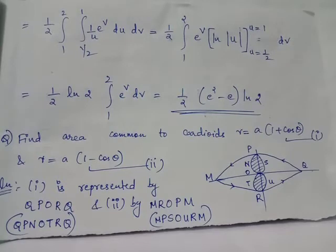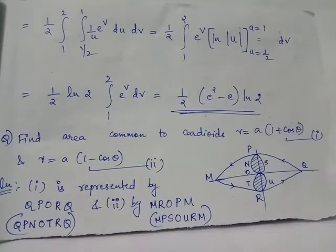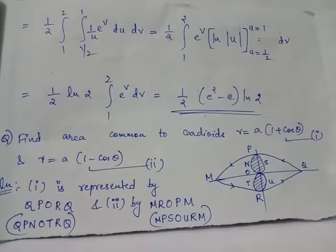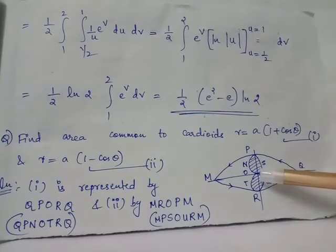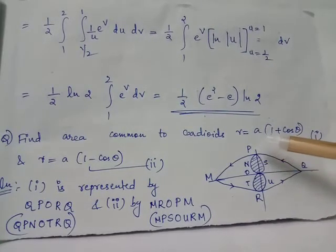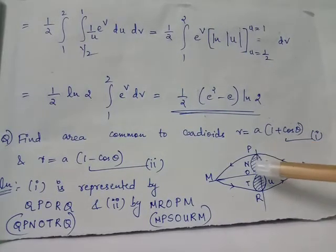Since these cardioids are symmetric with respect to the x-axis, the shaded region above the x-axis has the same area as the shaded region below the x-axis. So it is enough to find two times the shaded region above the x-axis. We can split the shaded region above the x-axis into regions OSP and PNO.